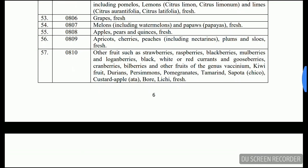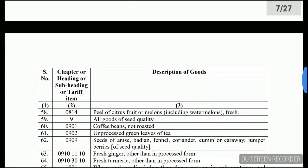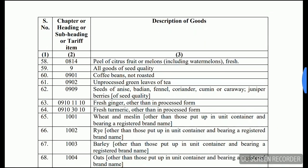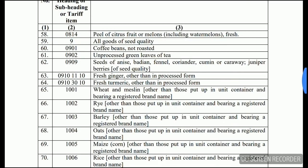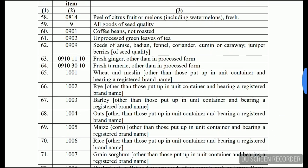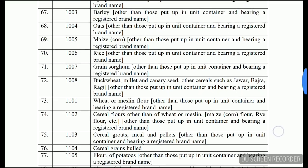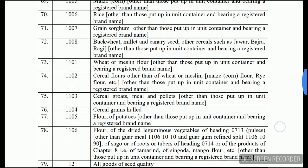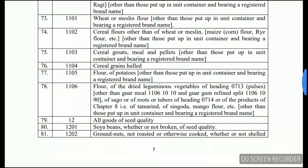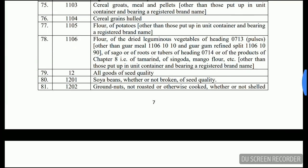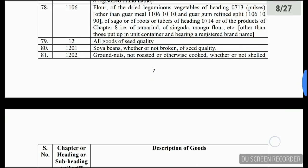Foods and fruits including apples and grapes — all of these are available in the annexure which you can read on the screen. Also included are fruit of melons, all goods of seed quality, coffee beans not roasted, unprocessed green leaves of tea, seeds of anise, badian and fennel, fresh ginger, fresh turmeric, wheat, barley, oats, maize, rice, grain, sugar, buckwheat — these are basic necessary items, and all goods of seed quality.